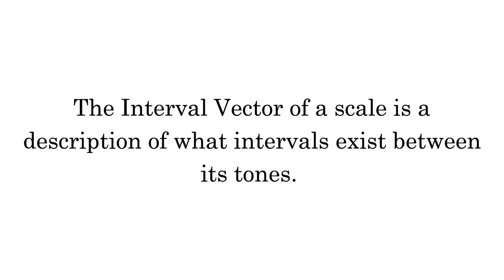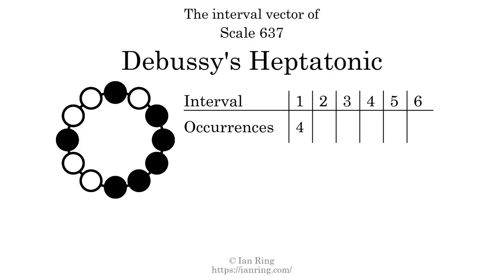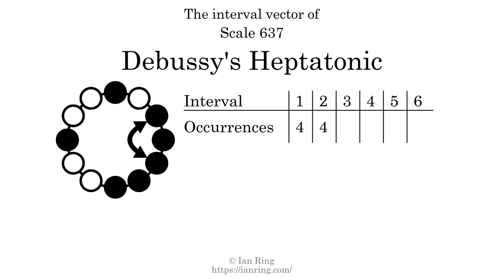The interval vector of a scale is a description of what intervals exist between its tones. There are 4 intervals with the size of 1 semitone, and 4 intervals with the size of 2 semitones.